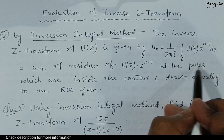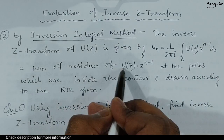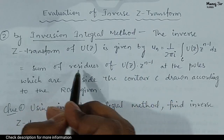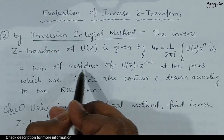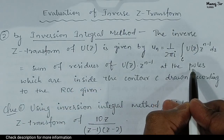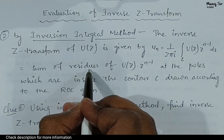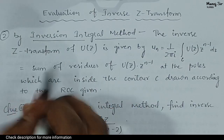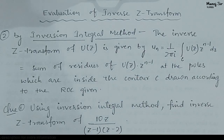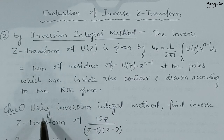We need to find the poles first. Then, as per the poles, we need to find the residue of U(z) into z power n minus 1. Then we need to sum all the residues. For example, if you have two poles, we will find two residues and sum both to get the value of u(n). Now we will take a problem and see how to solve it.